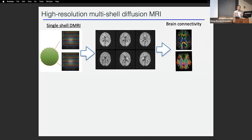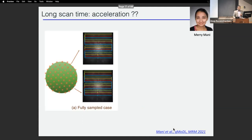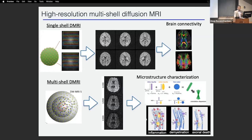We pushed this in several directions. I'll focus on one to illustrate: multi-shell diffusion MRI. Diffusion MRI collects data with different diffusion weightings in different directions, providing information about brain connectivity. With multi-shell diffusion MRI, you collect data on multiple shells, allowing you to fit microstructural models that give useful information about inflammation, demyelination, and so on. But this results in a very long acquisition time, since you're collecting a large number of images for every single slice.